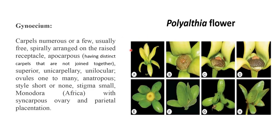In the gynoecium, carpels are numerous or few, usually free, spirally arranged on the raised receptacle — apocarpous, meaning having distinct carpels that are not joined together. Superior, unicarpellary, unilocular. Ovules one to many, anatropous. Style short or absent, stigma small. Monodora has a syncarpous ovary with parietal placentation.